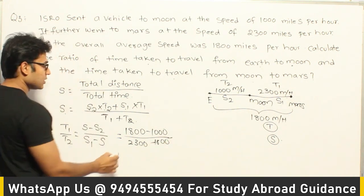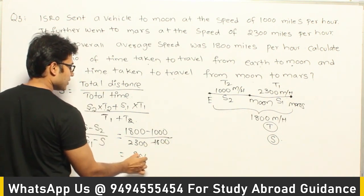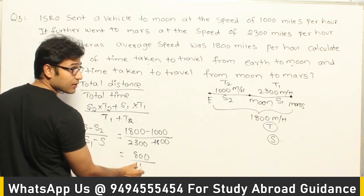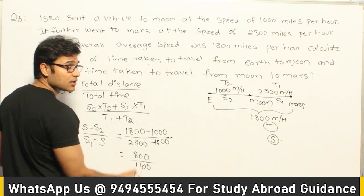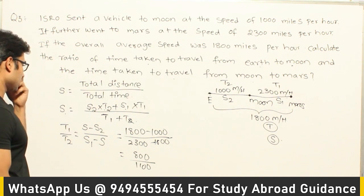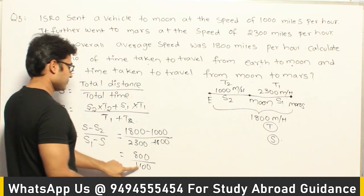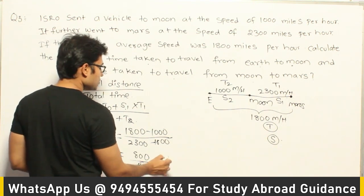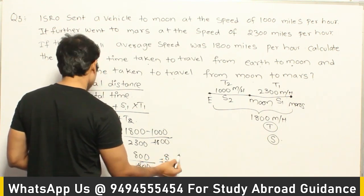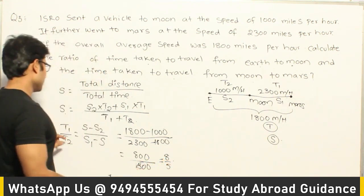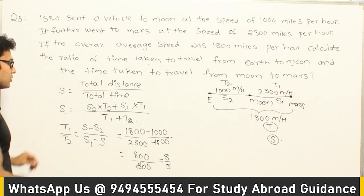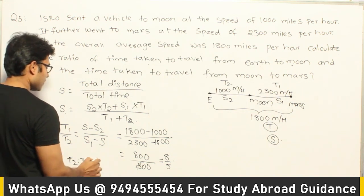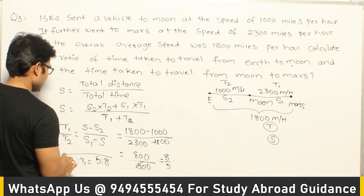So 800 divided by 500 gives us 8 to 5. Therefore T1 : T2 = 8 : 5. They asked for T2 : T1, so the answer is 5 : 8.